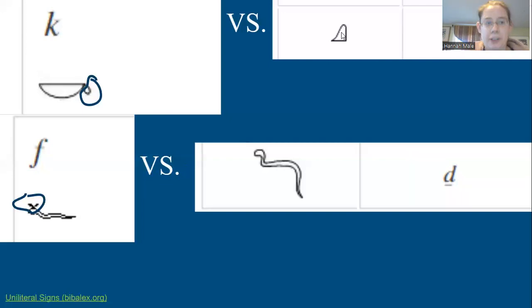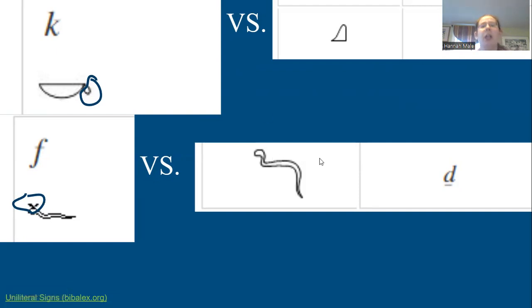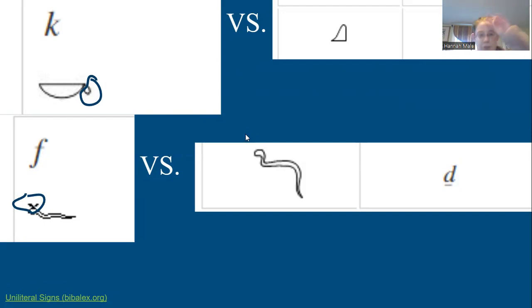Versus the unilateral that is a 'dotted K,' which is this hieroglyph here. Similarly, you have the unilateral F, which is the horned serpent — you know it's the unilateral F because of those little horns on top of the serpent's head. Versus what I call the 'underlined D' or 'second D,' which is just the regular snake. You know it's the underlined D because those little horns aren't there — it's just a regular snakehead. So this is an example of subtle changes that tell you which unilateral you're working with.